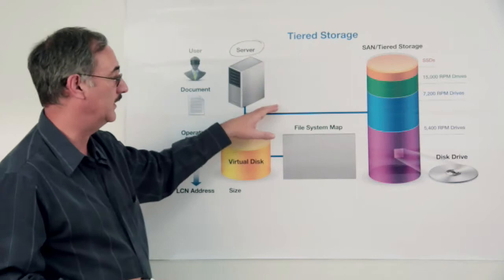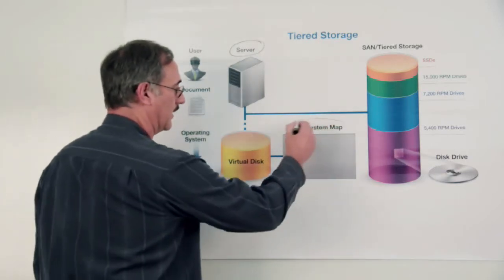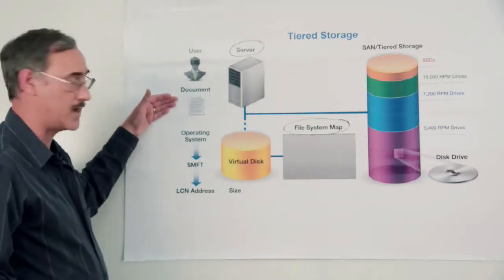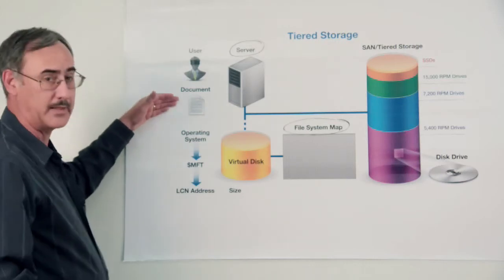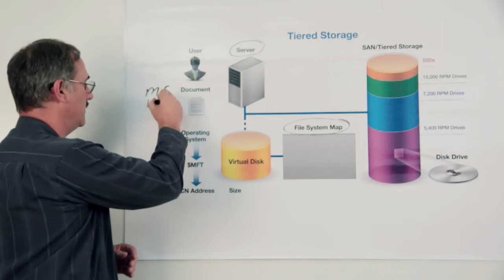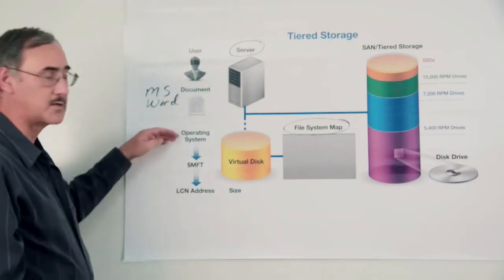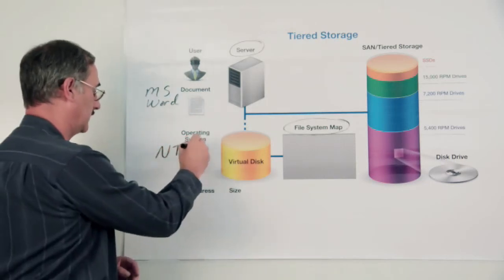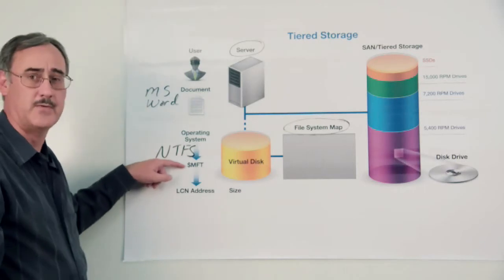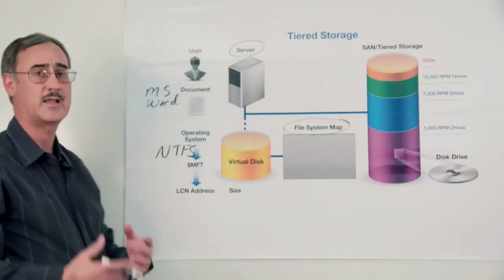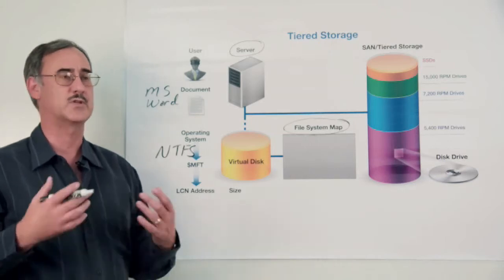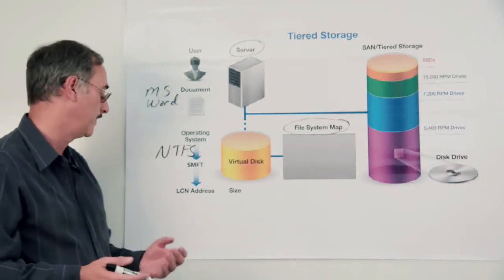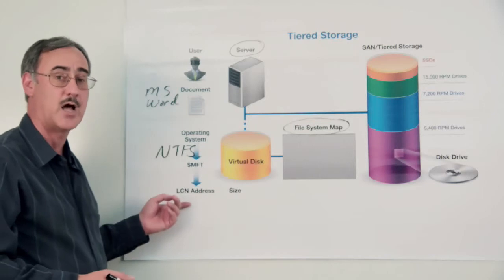What Windows really sees is a virtual representation known as a file system map. Now when a user goes to access a document, it's got to go from the application that you're using, in this case, Microsoft Word. It's got to talk to the Windows operating system, which talks to the NTFS file system dealing specifically with what's known as the master file table. This is like a table of contents. It knows everything from security attributes all the way down to what pieces are involved in an individual file.